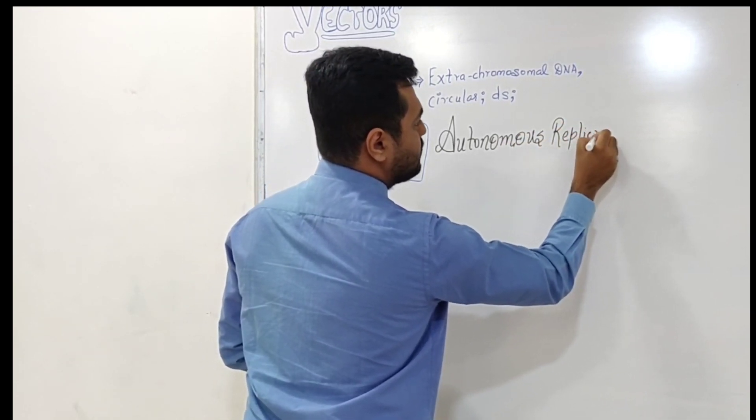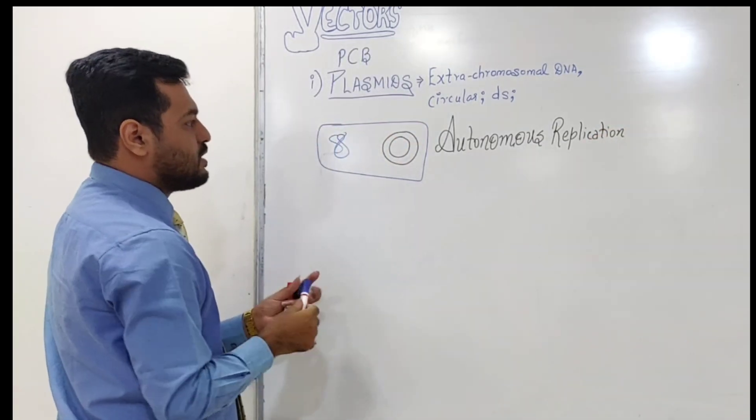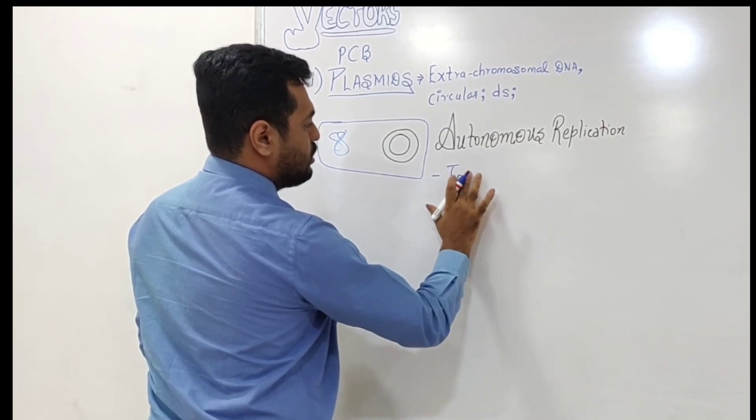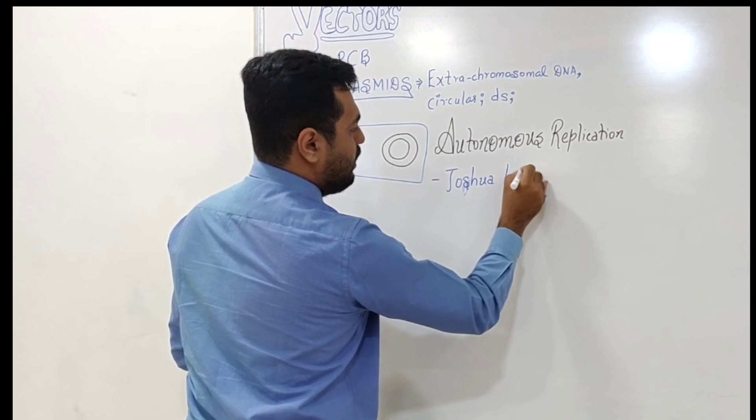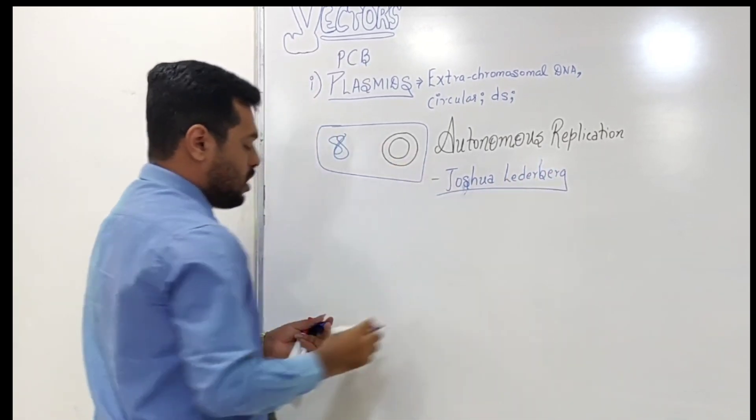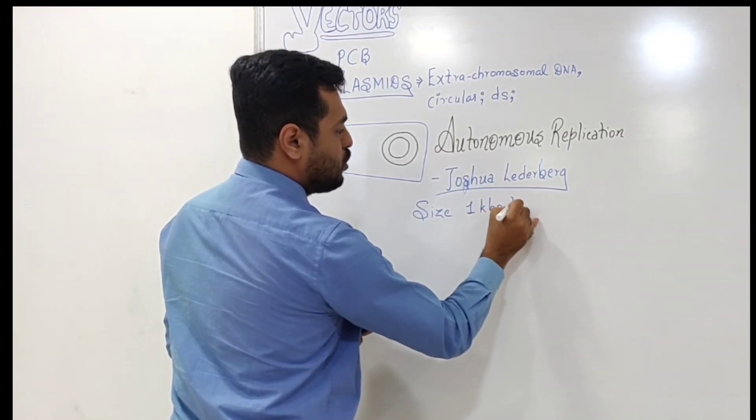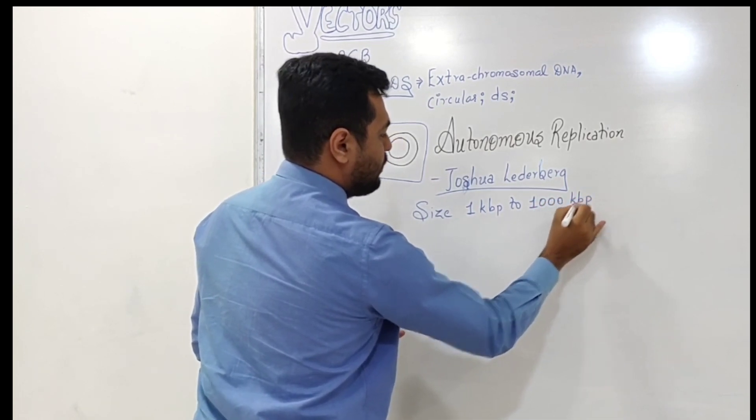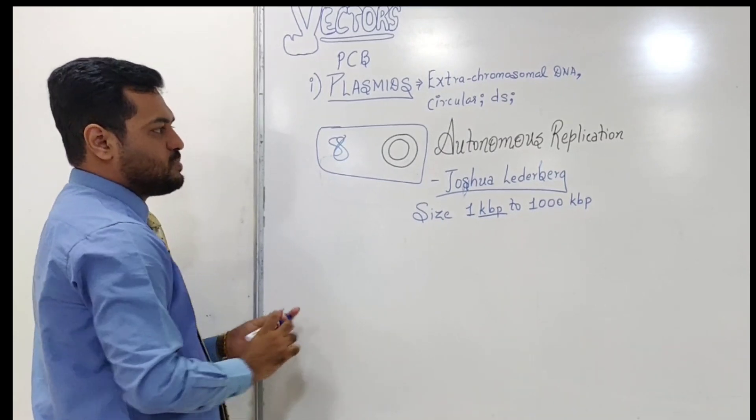This plasmid was discovered by an American biologist named Joshua Lederberg. The size of plasmids ranges from around 1 kilobase pairs to around 1000 kilobase pairs.